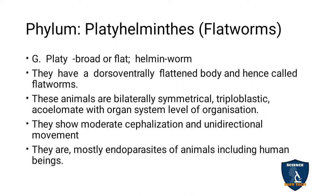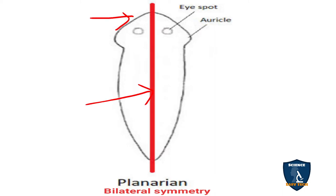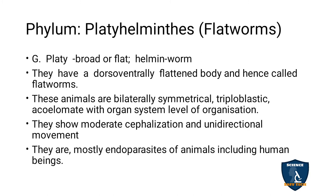They show moderate cephalization and unidirectional movement — the head region is developed, and they move in a single direction, i.e., forward movement only. They are mostly endoparasites of animals including human beings. Endoparasite means it lives inside another animal or human being. Examples: tapeworm, liver fluke.